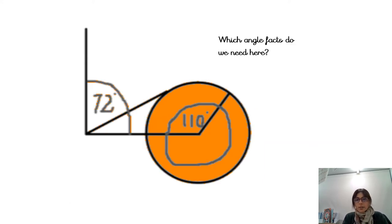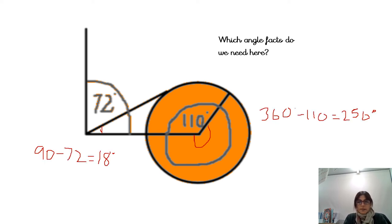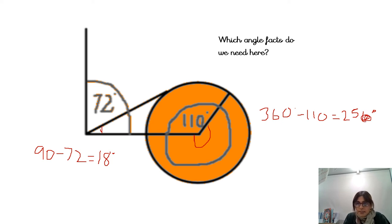Now have a go at finding the two missing angles. Here we have 90 degrees because it's a right angle — 90 take away 72 degrees gives us 18 degrees. Tick if you've got 18 degrees. And here, angles around a point equal 360 degrees, so 360 take away 110 gives 250 degrees. If you have got that, give yourself a tick. Well done.